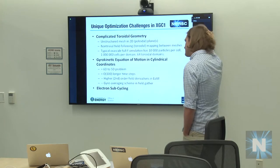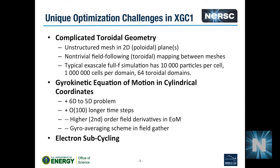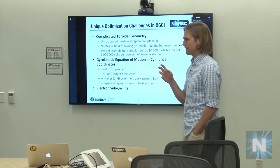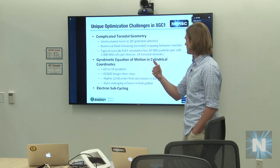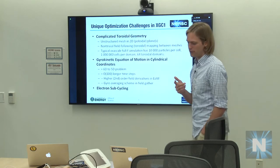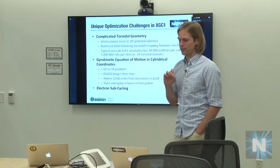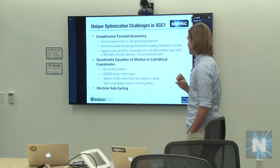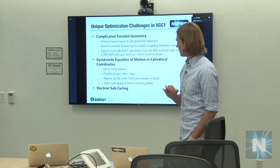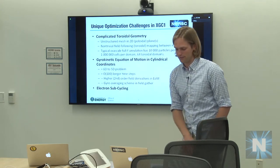What's specific in XGC1 is that it has this complicated geometry, dealing with it using an unstructured mesh in cross-planes of the torus. Since you get some benefit from approximately following the magnetic field with your mesh, there's a non-trivial mapping from one plane to the next. It's also a full-F code, simulating the whole distribution function rather than a perturbation around an analytic solution, so it uses a huge number of particles and very large meshes in large simulations.